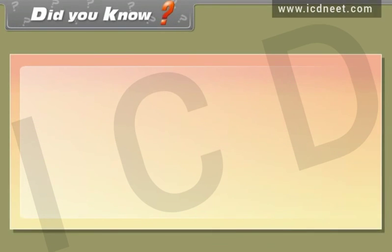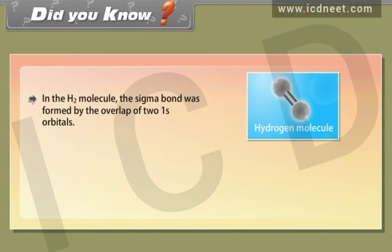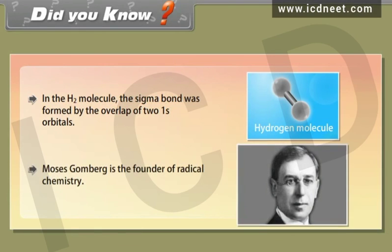In the hydrogen molecule, the sigma-bond was formed by the overlap of two 1s orbitals. Moses Gomberg is the founder of radical chemistry.